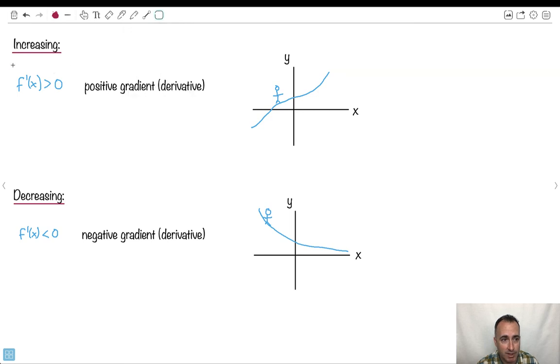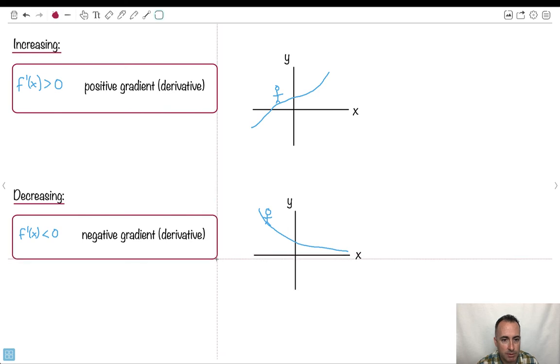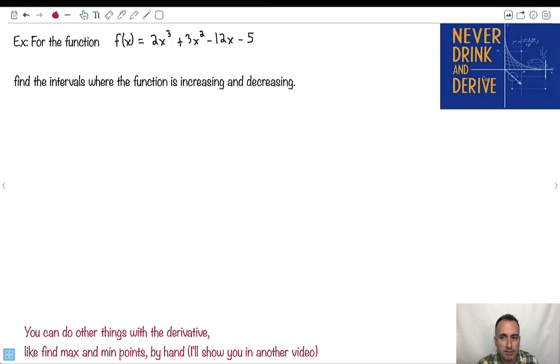This is all we need. So let's see if we can apply this to an example. I think that might be useful. So let's go ahead. We've got this one. Never drink and derive. Oh God, I hate myself. So for the function f(x) = 2x³ + 3x² - 12x - 5, let's look at where it's increasing and decreasing. I think the important thing is, let's try to maybe just do a sketch of this graph. Maybe that's the best thing to do.